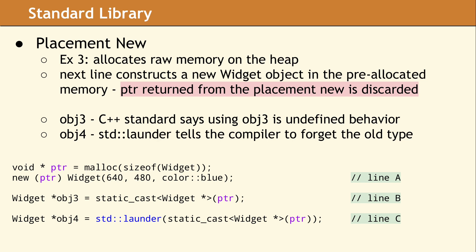In C++20, STD Launder was added to resolve this conflict. On line C, STD Launder instructs the compiler to disregard the original data type of PTR. The variable OBJ4 can be used to safely access the widget.